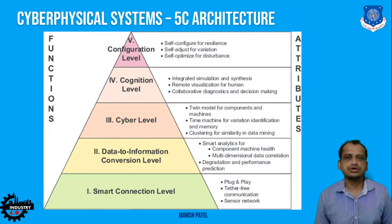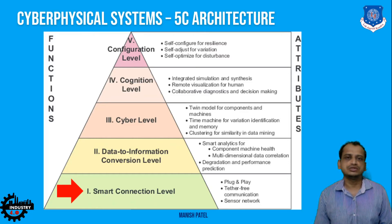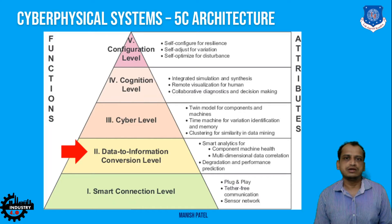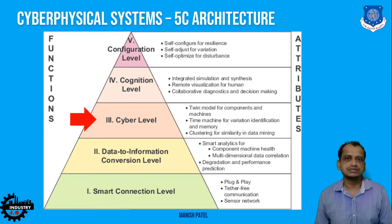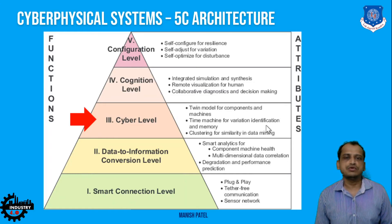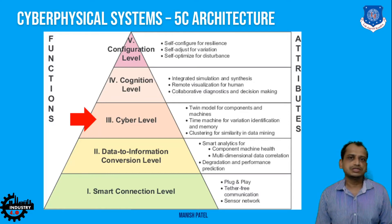The 5C architecture of cyber physical systems starts with the Connection level, where data is gathered through actuators and sensors. Next is Conversion, where raw data is converted into useful information through data analytics. Then the Cyber level creates digital copies of physical objects — virtual copies — allowing you to identify variations in monitored parameters. For example, creating a digital copy of a motor in the cloud lets you monitor and find variations in its parameters.